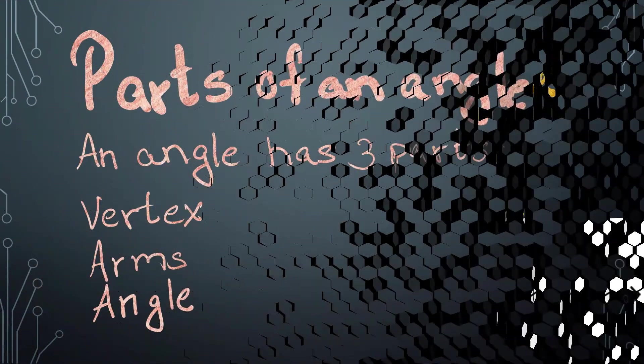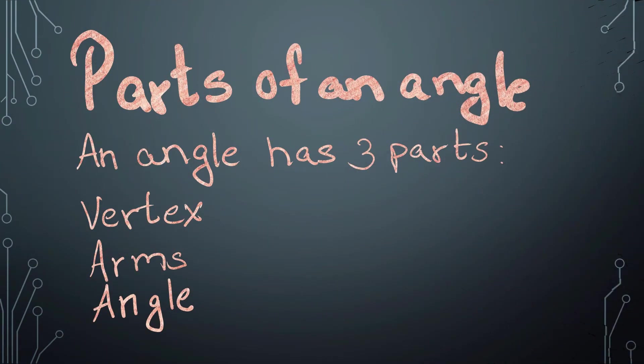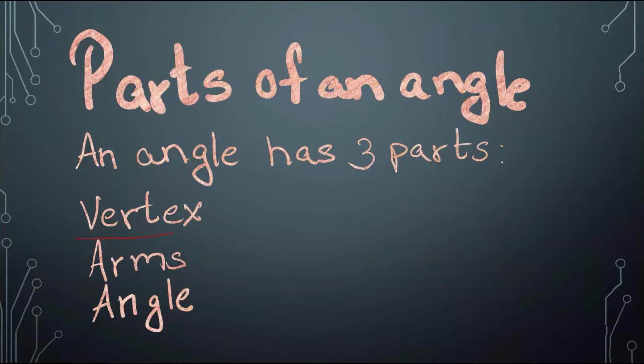Parts of an Angle. An angle has three parts: the vertex, the arms, and the angle itself.